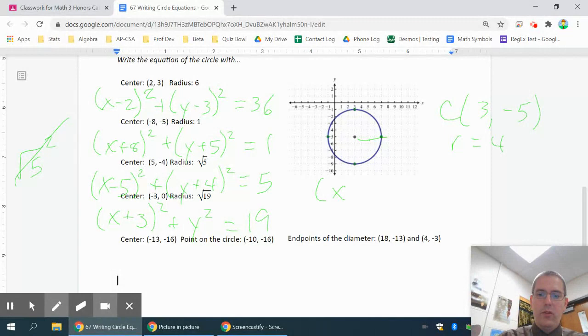Once you know the center and the radius, it's the same thing as what you just did. x minus 3 squared plus y plus 5 squared equals 16, 4 squared is 16. We'll go ahead and look at the ones at the bottom.